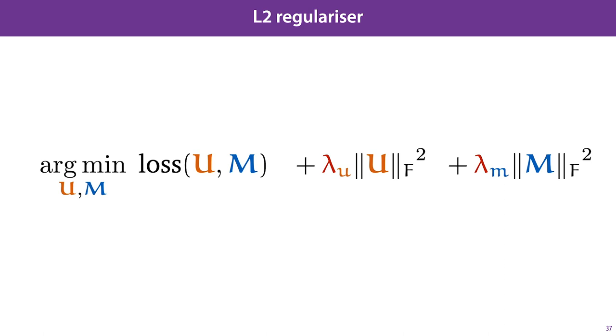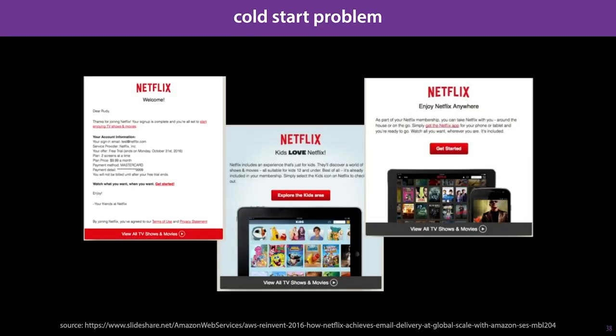An important problem in recommender systems is the cold start problem. When a new user joins Netflix, or a new movie is added to the database, we have no ratings for them, so the matrix factorization has nothing to build an embedding on. In this case, we need to rely on other information. There are two sources: implicit feedback and side information.